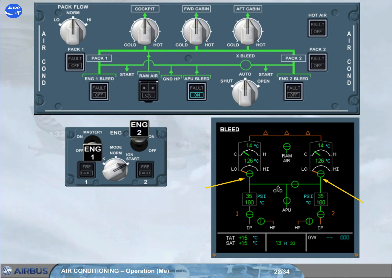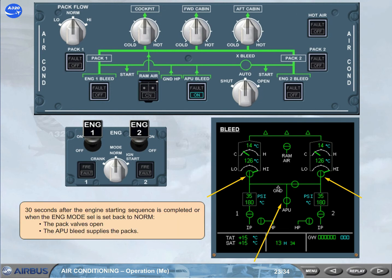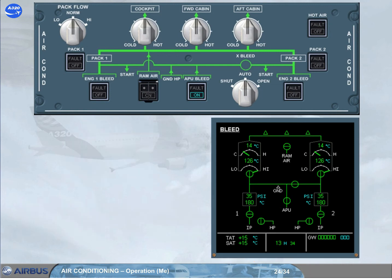Let's complete the sequence. 30 seconds after the engine starting sequence is completed, or when the engine mode selector is set back to normal, the pack valves open and the APU bleed supplies the packs. Notice that the engine bleed valves are closed even with both engines running. This is because APU bleed has priority over engine bleed. So, if you are departing from a performance-limited runway, the packs could run from the APU bleed air, resulting in no loss of engine performance and no weight penalty.